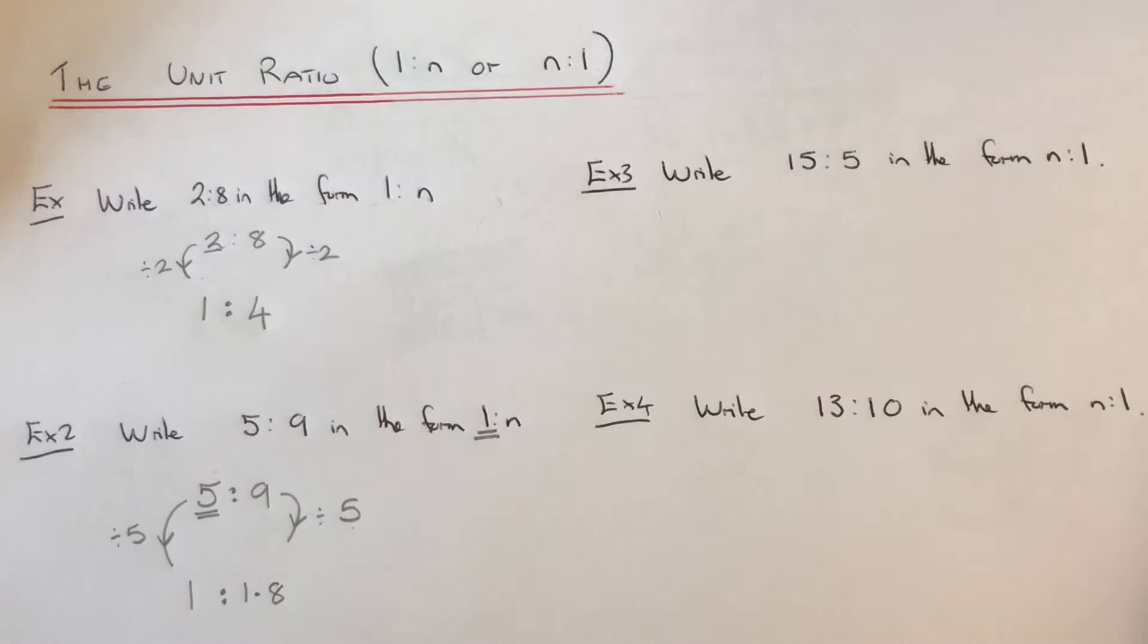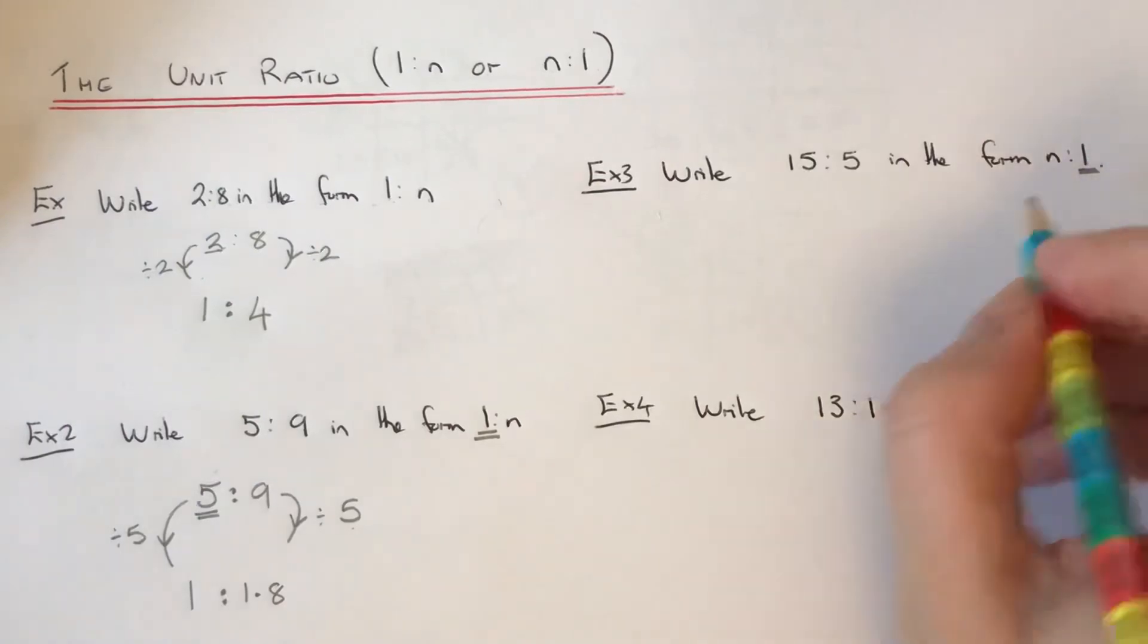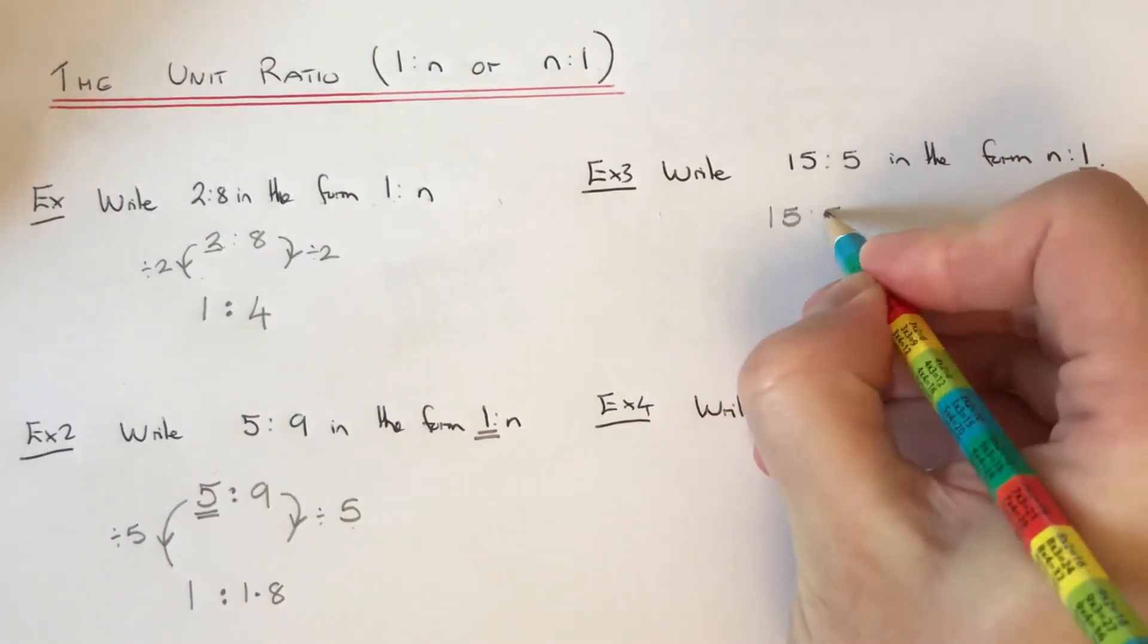So we've got to write 15 to 5 in the form N to 1. So this time, we want the 1 on the right hand side of our ratio.